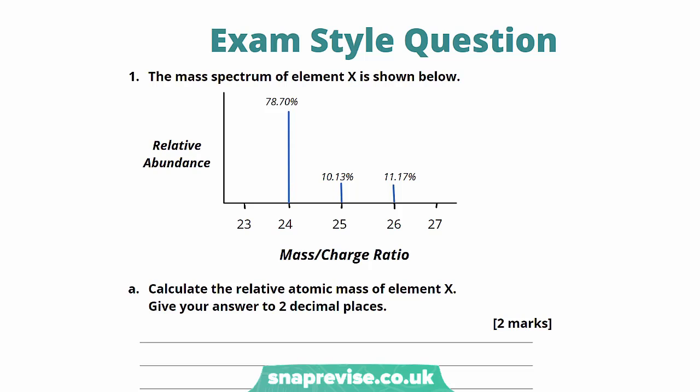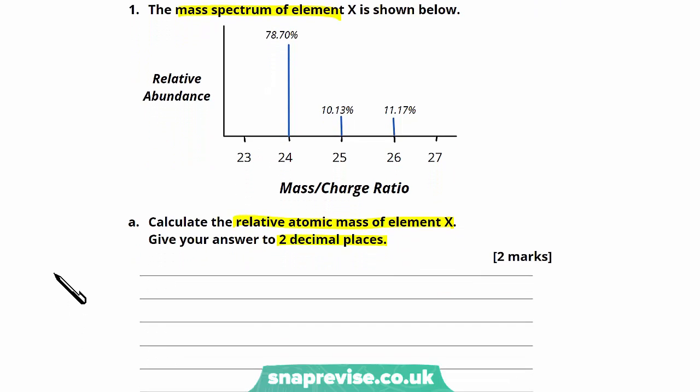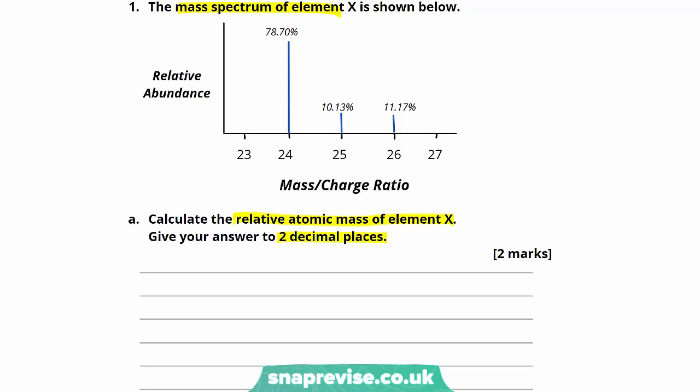In question one, we're given a mass spectrum of element X. We're asked to calculate the relative atomic mass of element X and importantly we're asked to give our answer to two decimal places, which is something we must remember to do. So let's take a look at the calculation that we're going to do. We're going to multiply the percentage relative abundance by the appropriate mass to charge ratio and then divide through by 100 as we know we should do.